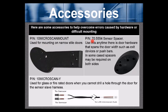Part number 70.5554 sensor spacer. Use this anytime there is door hardware that spans the door width such as exit devices or push bars. And in some cases spacers may be required on both sides of the door, depending on what kind of hardware is there.